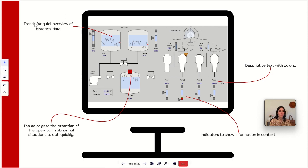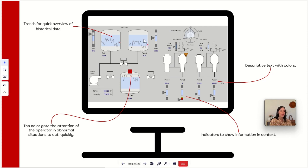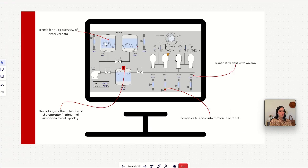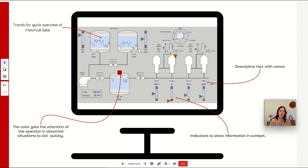Then we have trends for a quick overview of historical data. In this case, you can see that this trend is inside the blue frame, which means it is inside the desired values — everything is right. But here we can see the trend goes up and down and goes outside the desired value, so something is not right for this process value. We can see the same for this tank. Basically, a high performance HMI will look more or less like this, and the idea is that the operator can quickly see when something needs attention and act quickly.